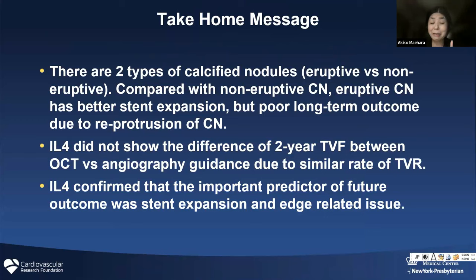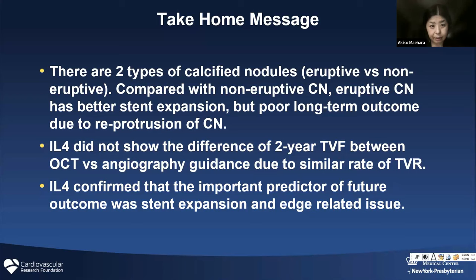In summary: number one — calcified nodule. There are two types: eruptive and non-eruptive. Compared to non-eruptive, eruptive has better stent expansion, but because of re-protrusion, eruptive has poor long-term outcome. Number two — Illuminium-4 did not show a difference in two-year target vessel failure between groups due to similar target vessel revascularization rates. Altogether, Illuminium-4 confirmed that the important predictor of future outcome is stent expansion and edge-related issues. Thank you very much.